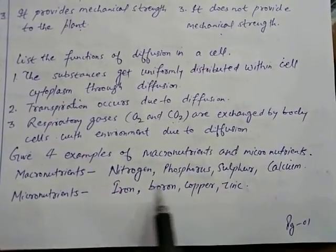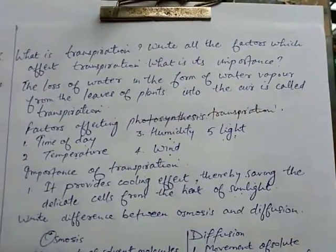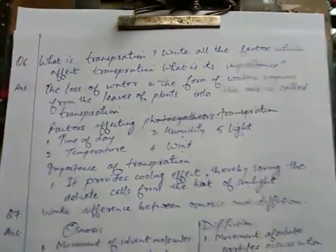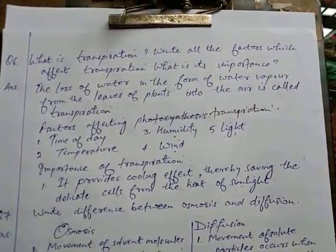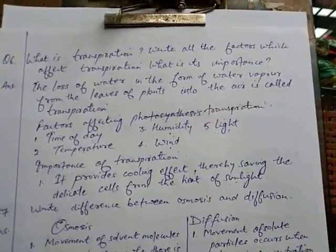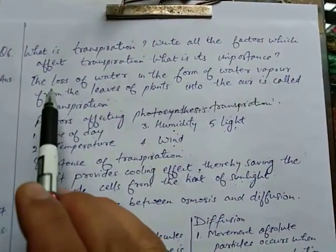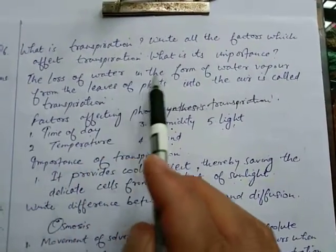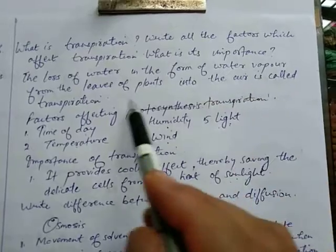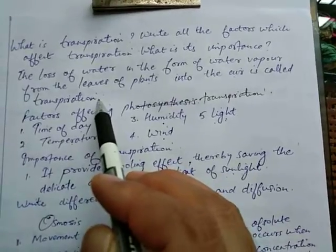Moving to the next question: What is transpiration? Write the factors which affect transpiration and its importance. The loss of water in the form of water vapor from the leaves of plants into the air is called transpiration.